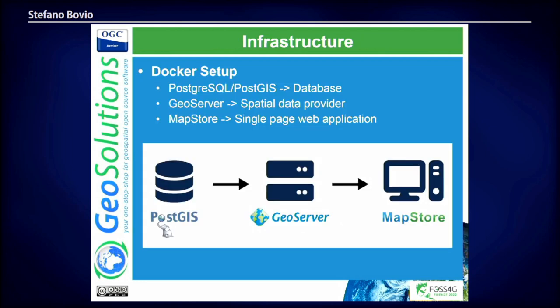Finally, when we had all three pieces — the database with PostGIS and Postgres, GeoServer with Spatial Predictor, and MapStore — we put them together inside a Docker container, so we were able to share this across different operating systems.